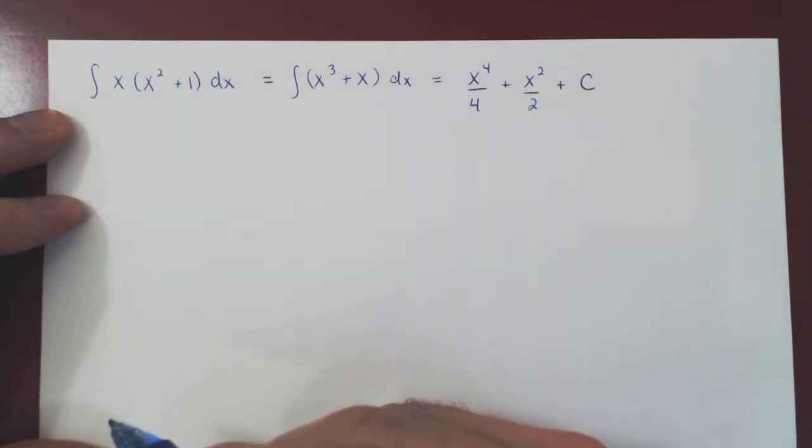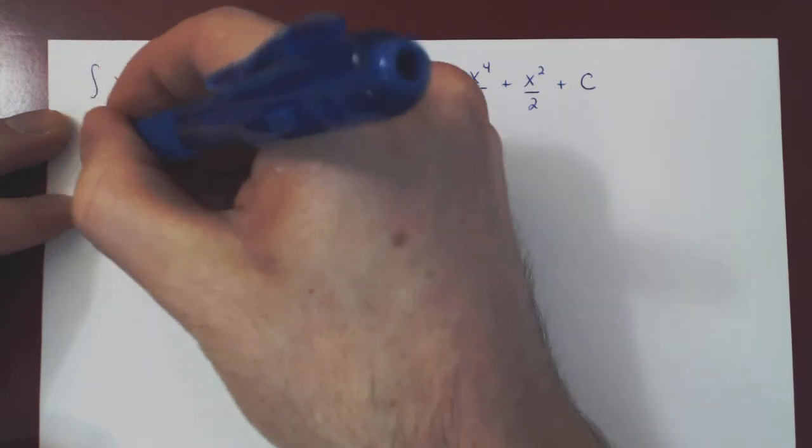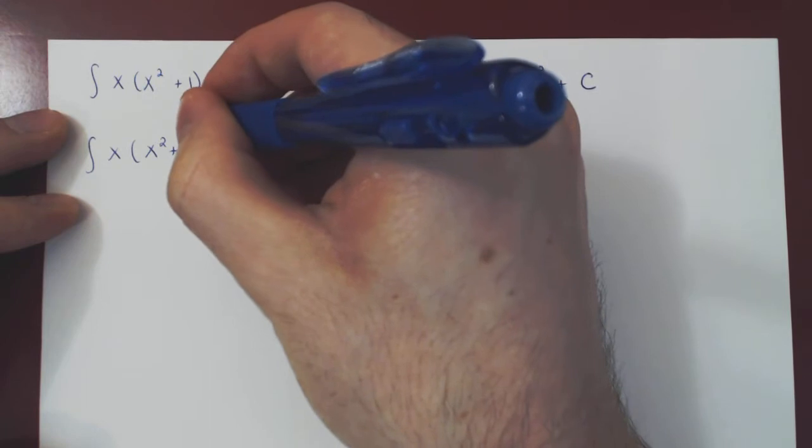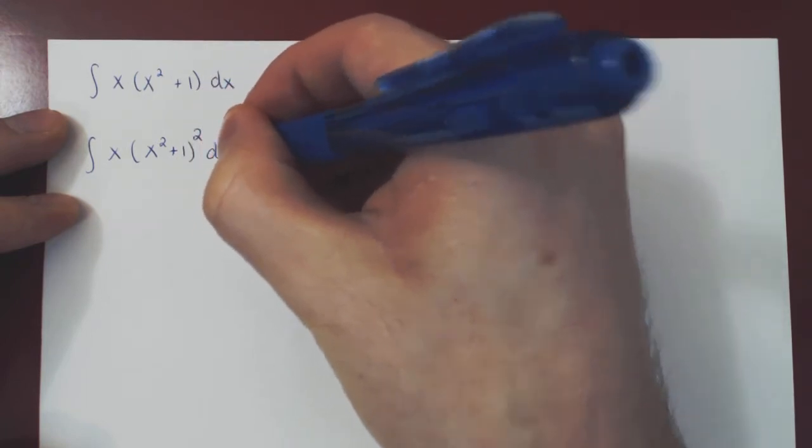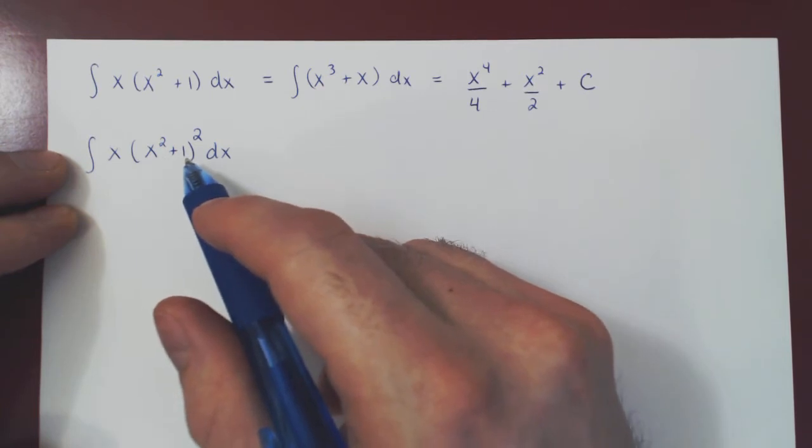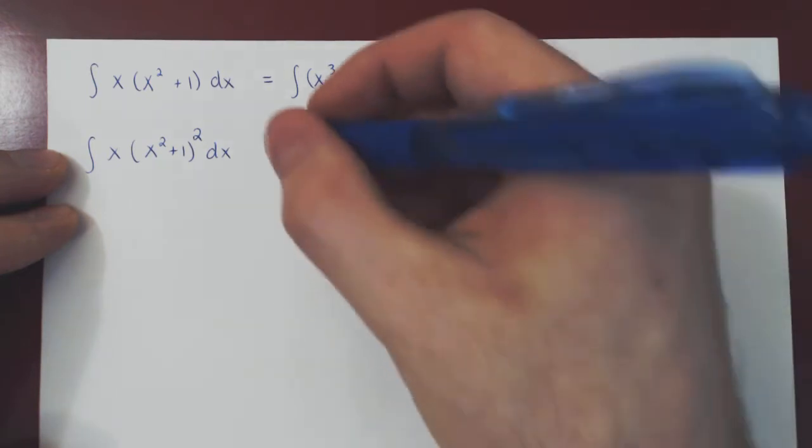That was pretty easy. What if we make it a little more interesting? Integrate x times x squared plus 1 squared dx. Once again, we have a product and we can't integrate over a product unless we multiply it out.